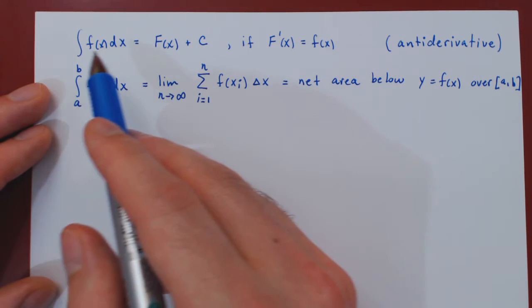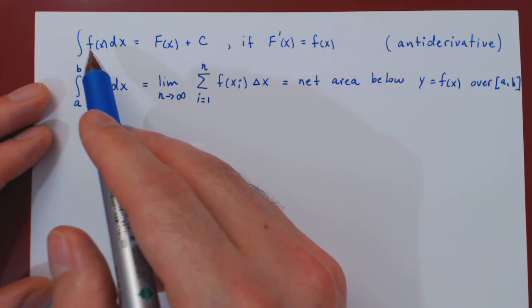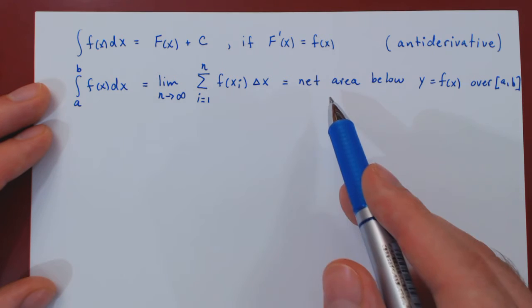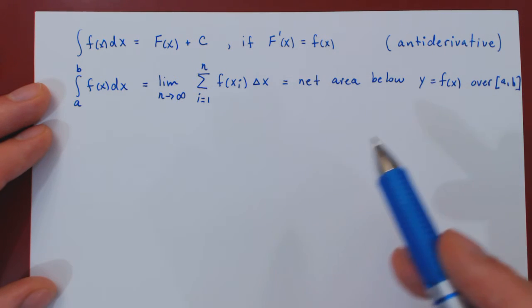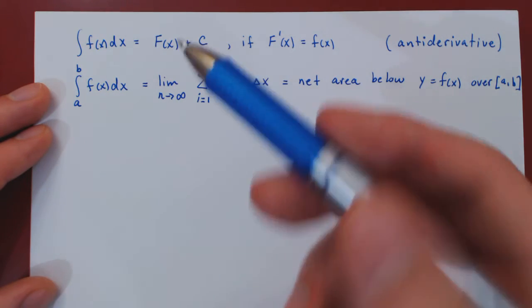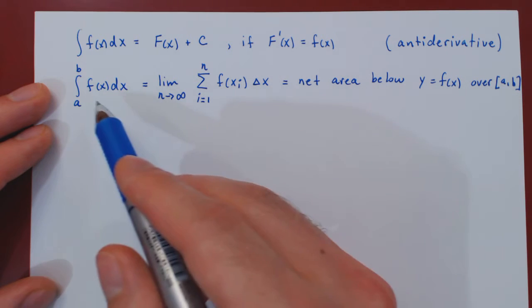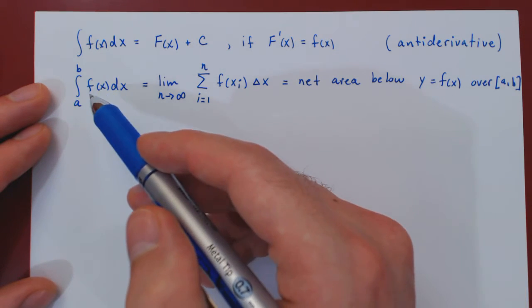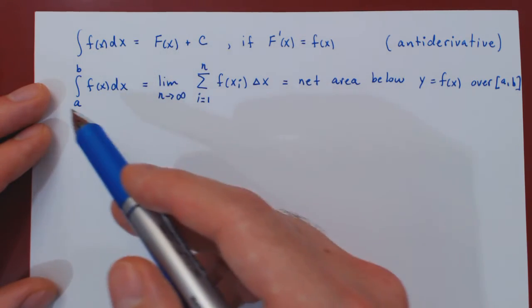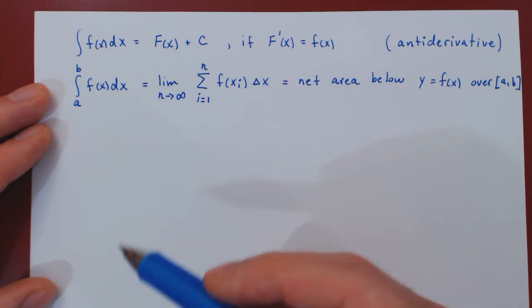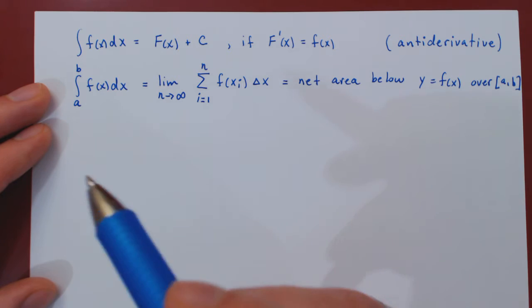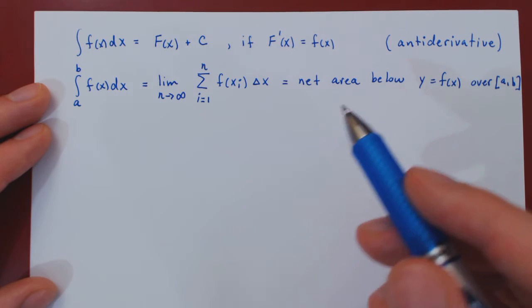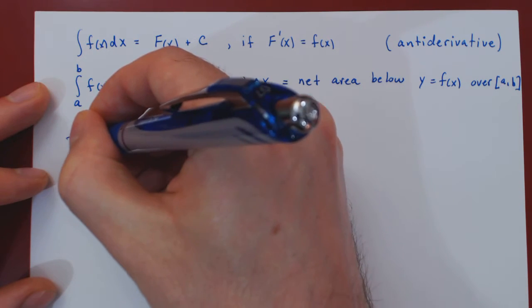So we have our two integrals: the indefinite integral, finding all antiderivatives of lowercase f of x, and the definite integral from a to b, finding the net area below the curve between x equals a and x equals b. On the surface the two integrals are very different — one consists of antiderivatives, the other of areas under curves. They look completely different, and yet we use very similar notation, which suggests there is a connection. This connection we call the Fundamental Theorem of Calculus.